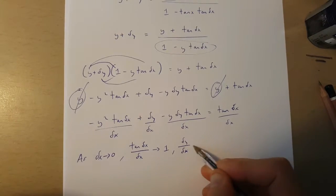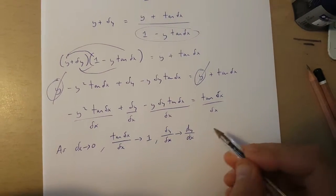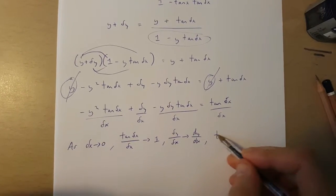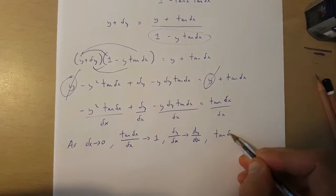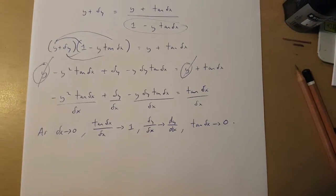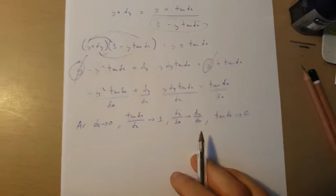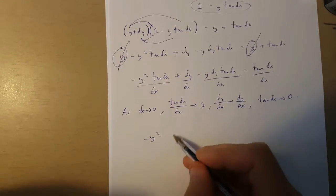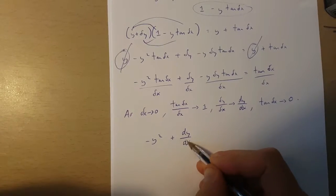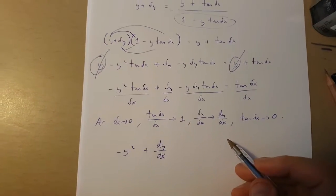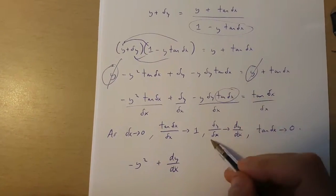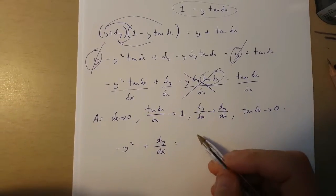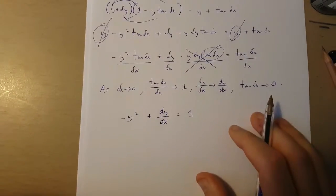This means that minus y squared plus dy over dx, because this tan change in x makes this disappear, is equal to 1.